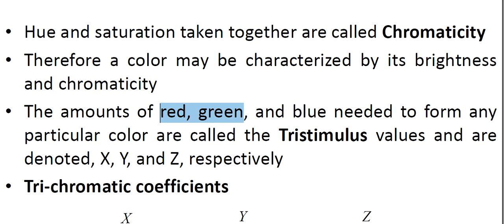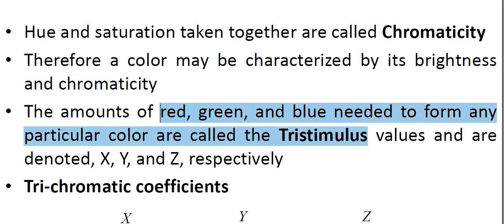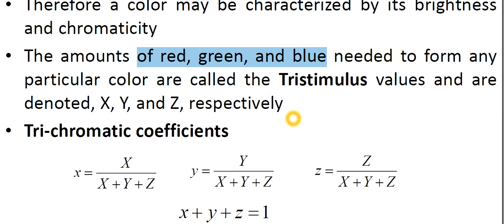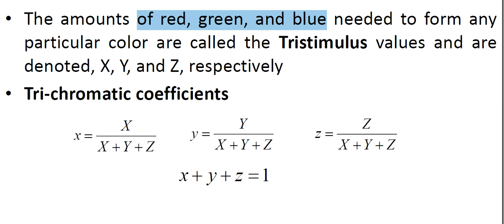The amounts of red, green, and blue needed to form any particular color are called the tristimulus values, and they are denoted by X, Y, and Z respectively. These three stimulus values are the amounts of red, amounts of green, and amounts of blue we will need to form other colors.